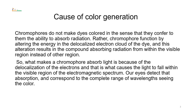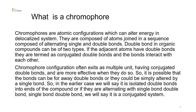Our eyes detect that absorption corresponding to the complete range of wavelengths, seeing the color. It is only the visible part of the electromagnetic radiation which, when absorbed by a molecule, reflects a color and that is what is perceived by our retina. Chromophores are atomic configurations which can alter energy in a delocalized system. They are composed of atoms joined in a sequence of alternating single and double bonds.